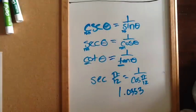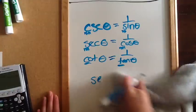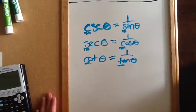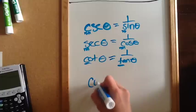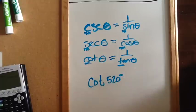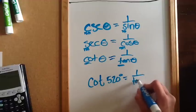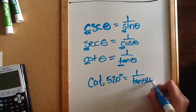So that's how you put that in the calculator. If I want to put cotangent in the calculator, for example, if I want the cotangent of 520 degrees, the cotangent is the reciprocal of tangent, so I'm going to do 1 divided by the tangent of 520 degrees.